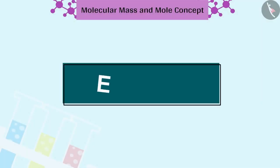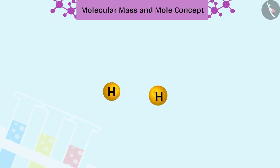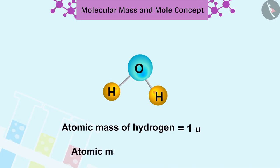Let us understand this by an example. Let us find the molecular mass of water H2O. Water is made up of hydrogen H and oxygen O atoms. The atomic mass of hydrogen is 1U and the atomic mass of oxygen is 16U.